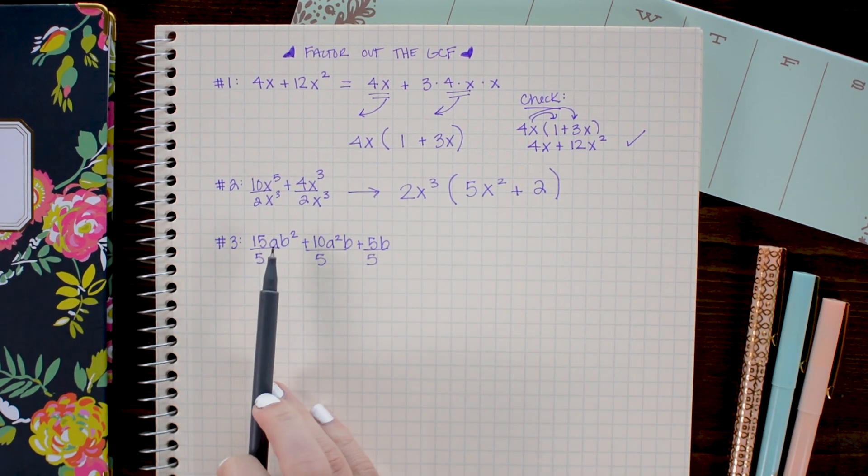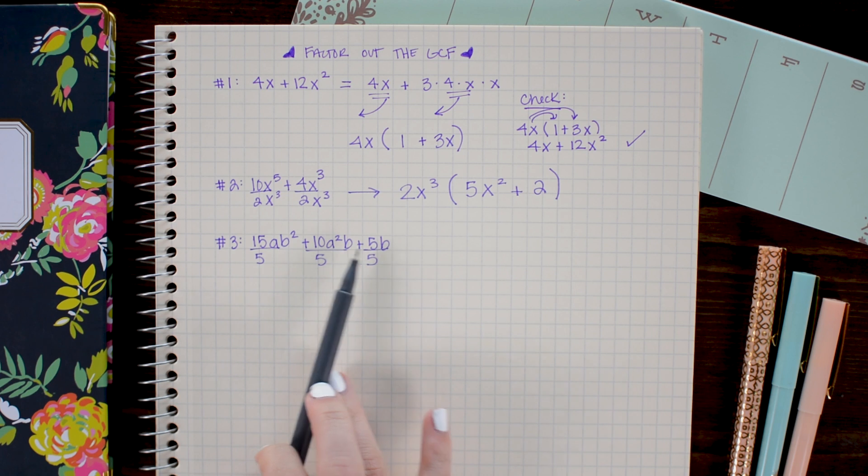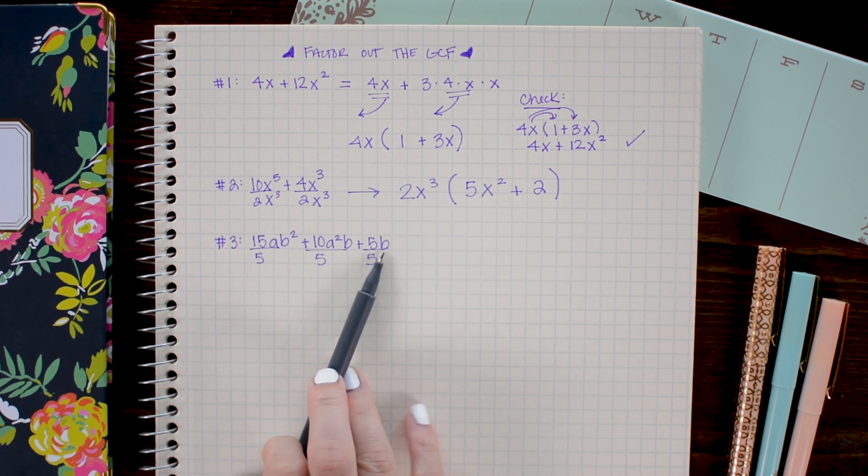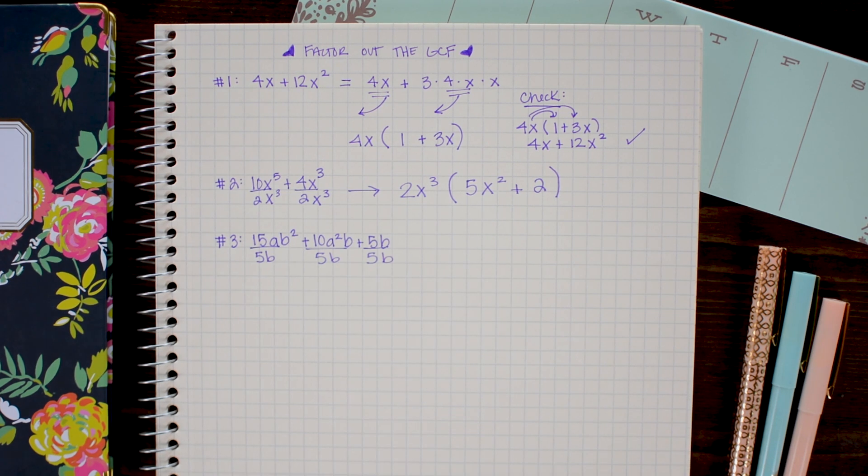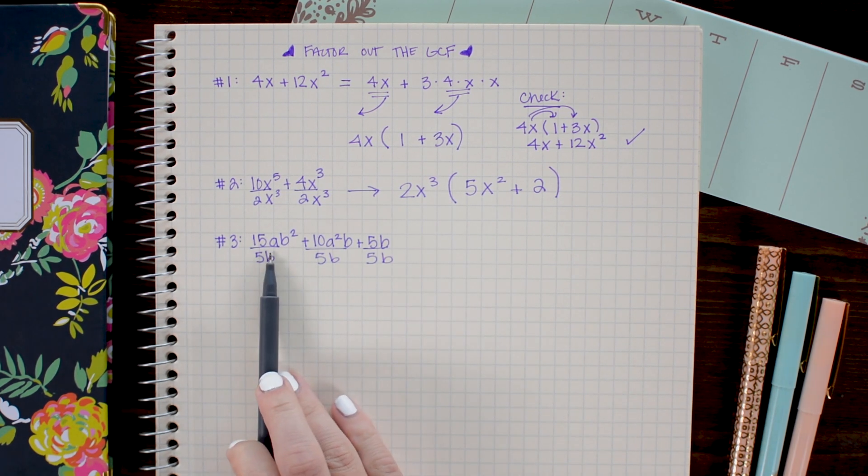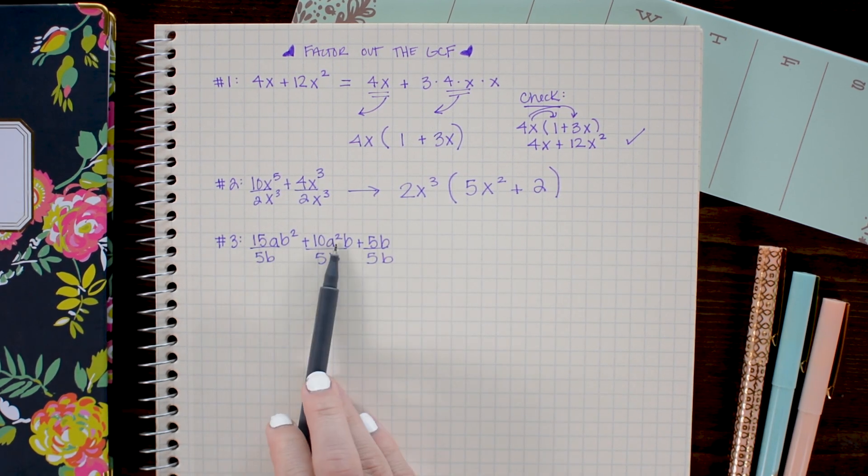Next I see that each of these terms has a b. So I can pull out a b as well. Notice that I can't pull out an a though because only the first two terms have a's and the third term doesn't.